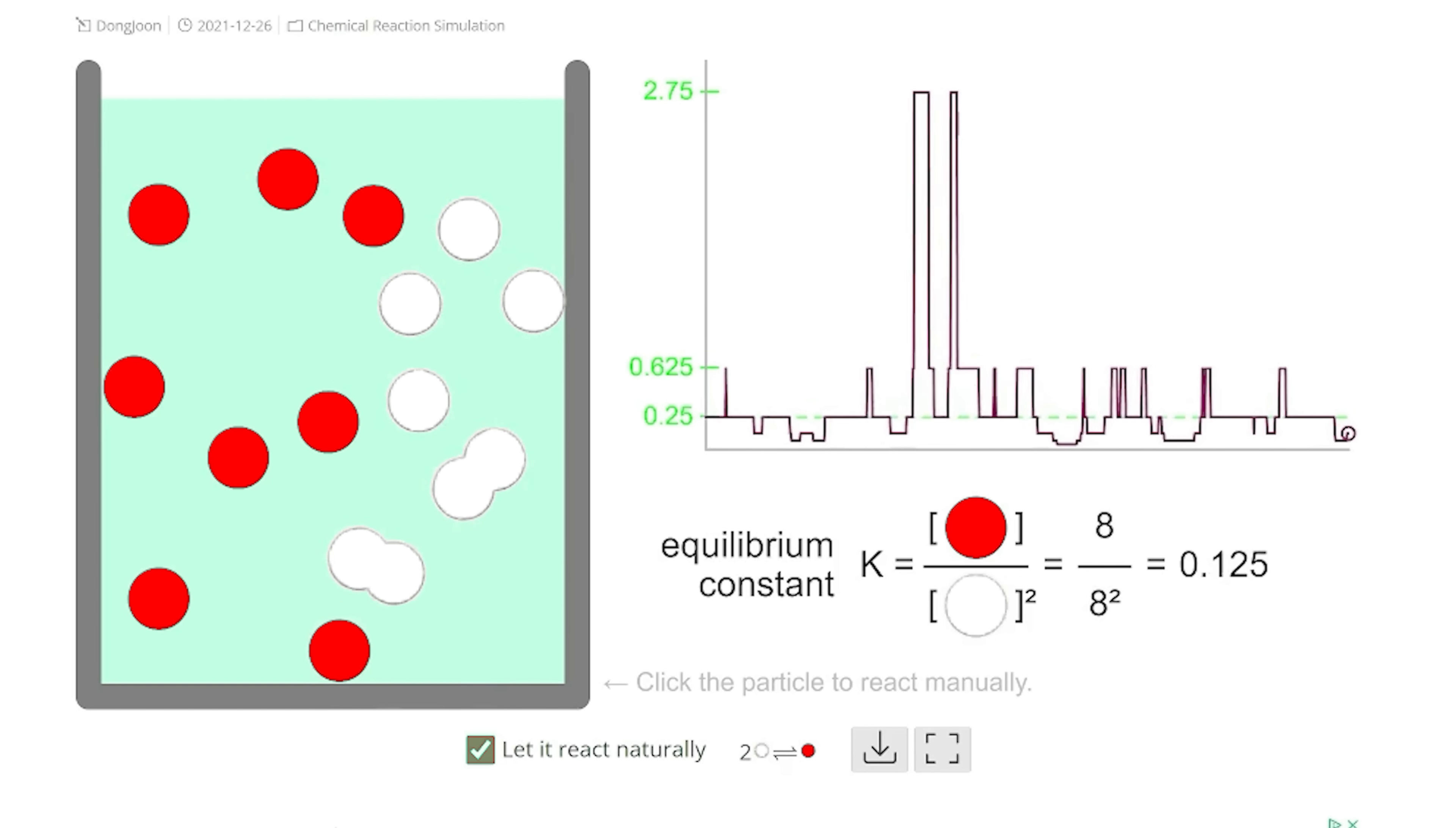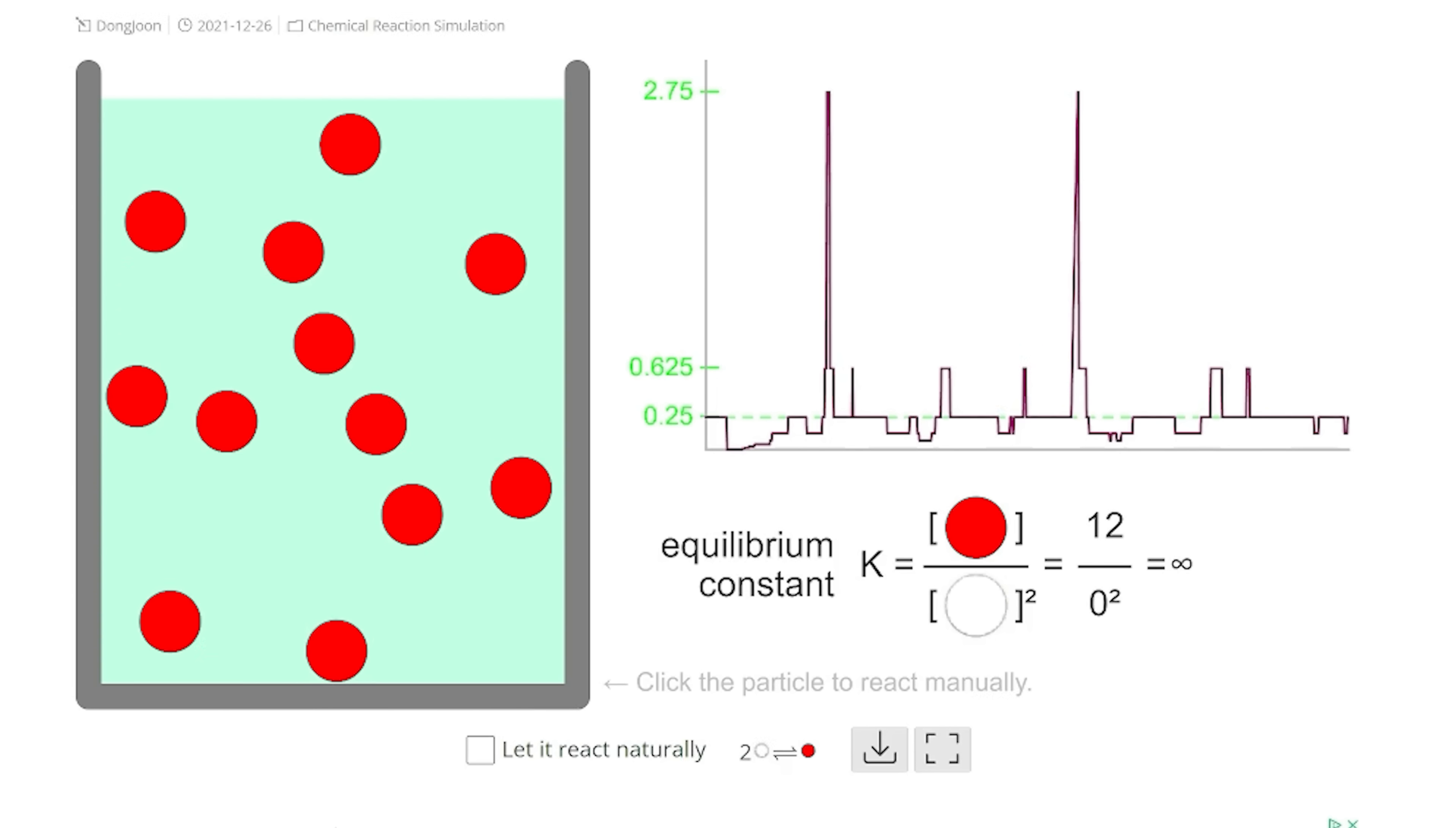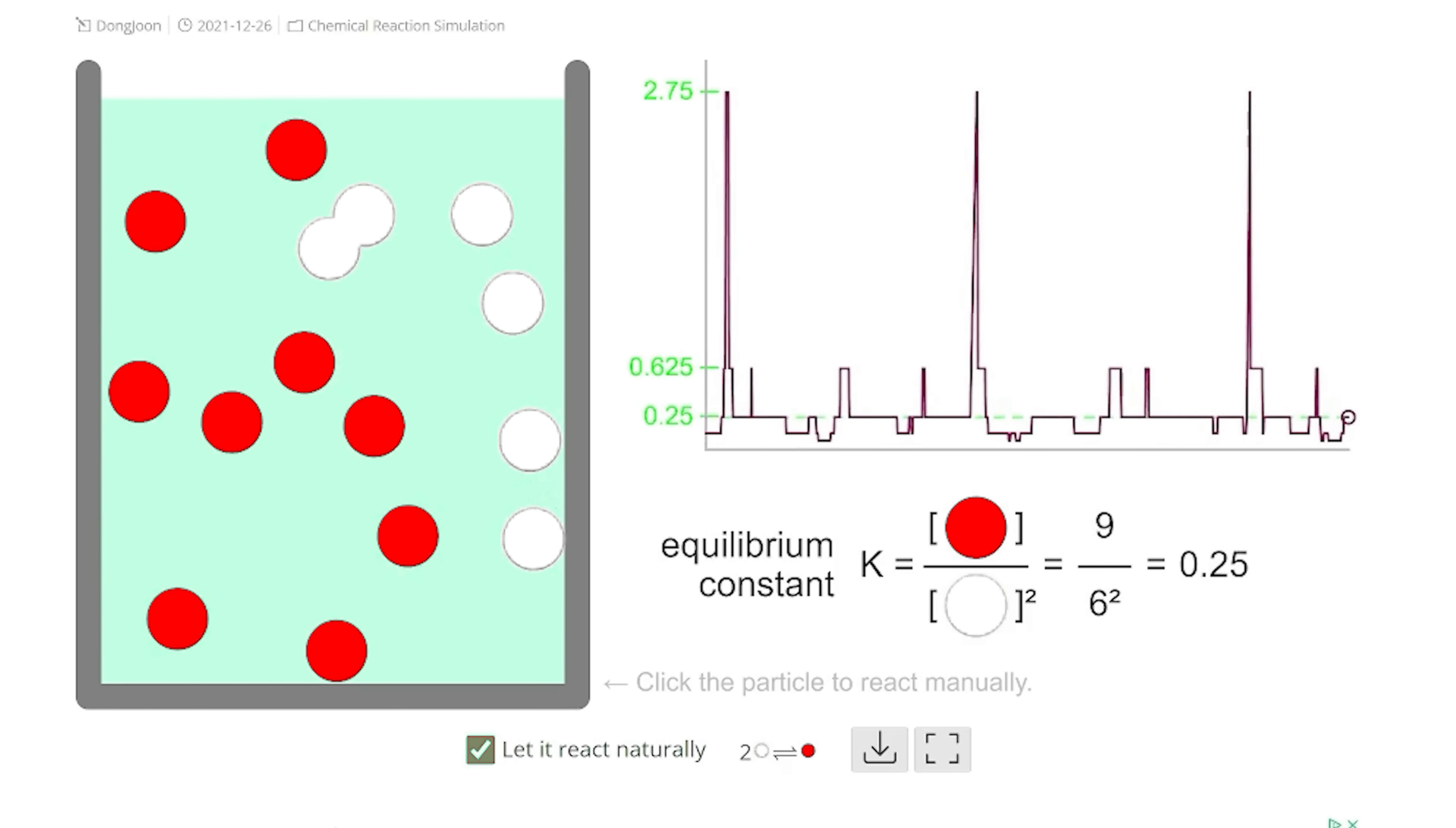So if you start out with only white dots, it's going to push it to have more red dots. And likewise, if you start out with only red dots, it's going to push it to have more white dots. If you change the concentration of any of these dots, it's going to push it one way or the other.